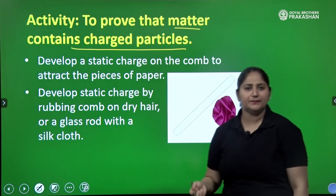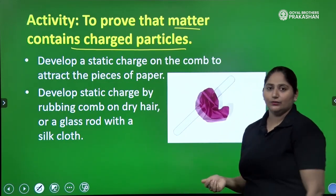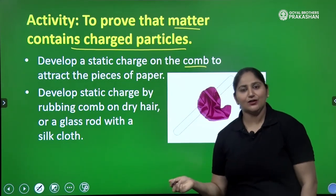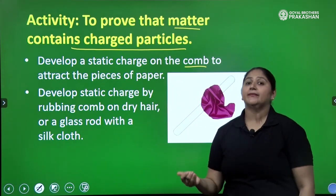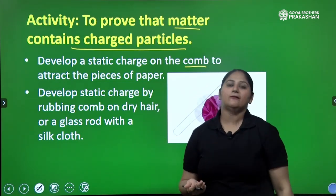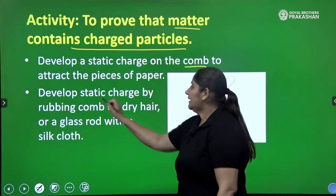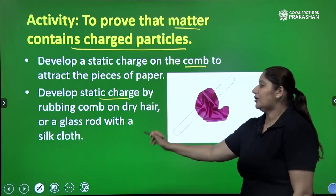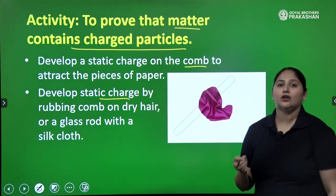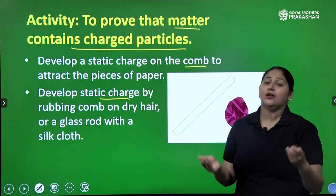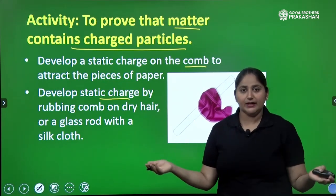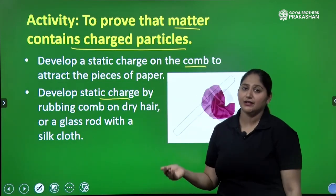The activity clearly proves that matter contains charged particles. How we will do the activity? It is very simple. You can do it at home. Develop a static charge on the comb to attract the pieces of paper. Take a comb and put some pieces of paper and then try to attract. First of all, rub it on your hair to develop a charge on the comb and then the pieces of paper will be attracted. Similarly, develop the static charge by rubbing comb on the dry hair or a glass rod with the silk cloth. By this means there will be a development of a charge. If atom contains charged particles, it means atom is divisible. It is not indivisible.